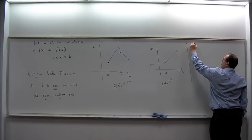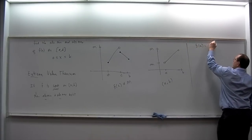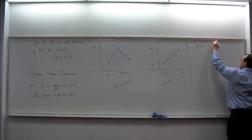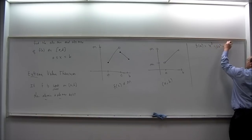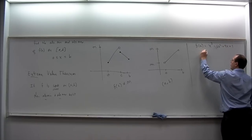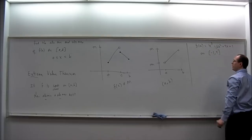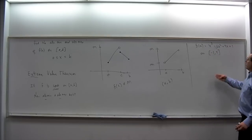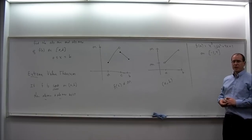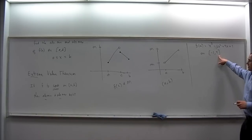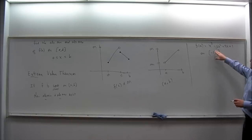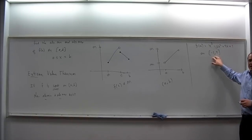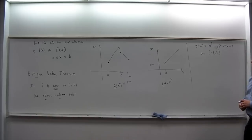Our problem is to find those extreme values. Consider the function f(x) = x³ − 6x² + 9x + 1 on the closed interval from negative 1 to 4. This is a polynomial function, so it's continuous on any interval — in particular, it's continuous on this closed interval from negative 1 to 4. So the theorem guarantees this function will have an absolute maximum and an absolute minimum on the interval. Now the question is: how do we find them?